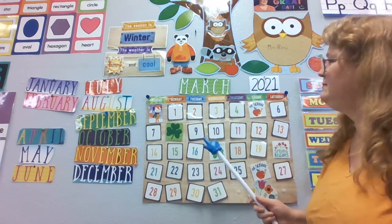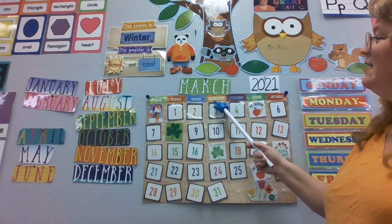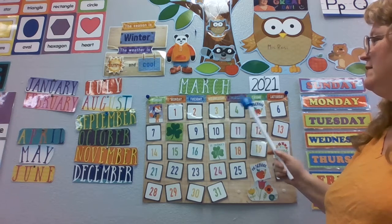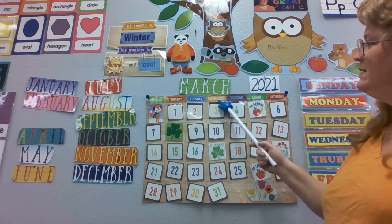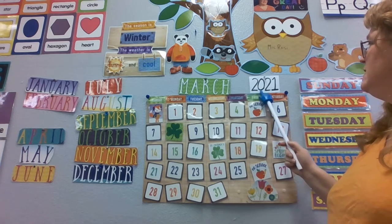Alright, what time is it? Yep, you guessed it, it's calendar time! Okay, yesterday was Tuesday, today is Wednesday, tomorrow will be Thursday, today is Wednesday, March 10th 2021.